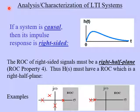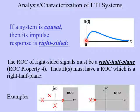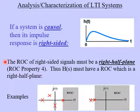First of all, in the time domain, if a system is causal, then its impulse response is right-sided. Here's an example of an impulse response H of T for some system. Notice that the impulse response starts at time zero when the impulse was applied. Since the system is causal, the system is not going to respond until after the impulse is applied, so H of T must be right-sided. The region of convergence of a right-sided signal must be a right half plane — this is ROC property number four.